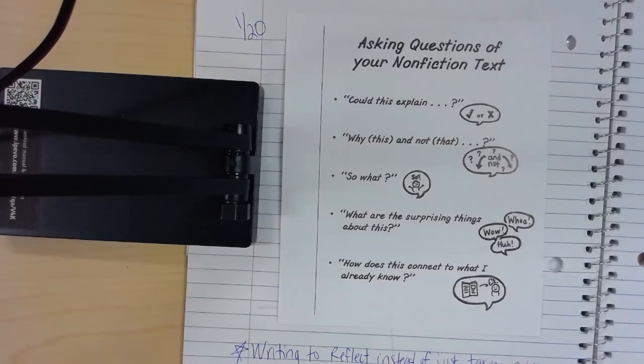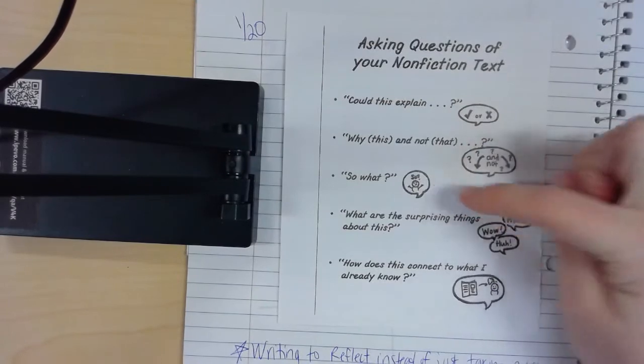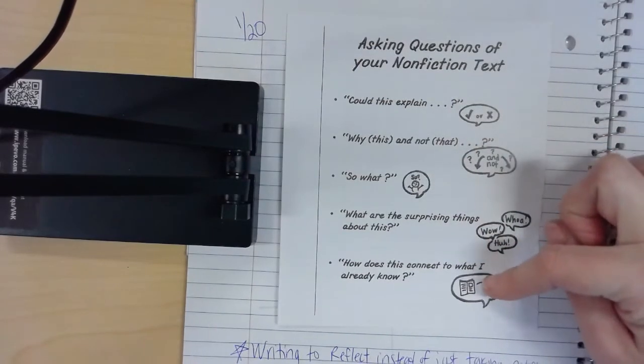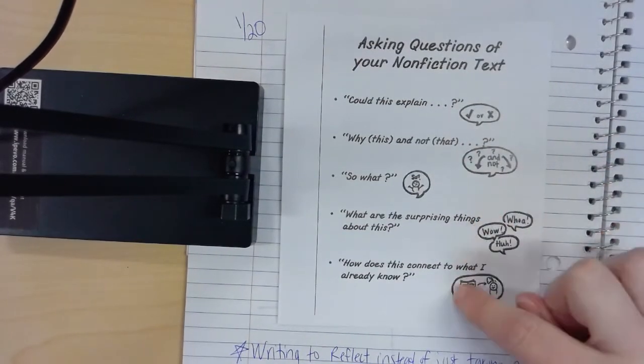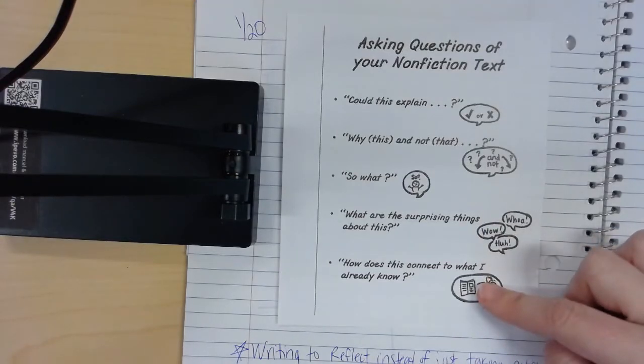So before you start your research today, think of some things that you really would like to know about your topic or your issue. And then write those down. And then as you're working, see if you can use these questions to help you. Particularly, you can always use these two: What are the surprising things about this? And how does this connect to what I already know?